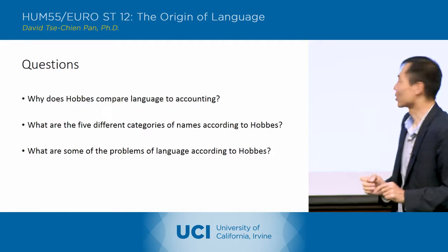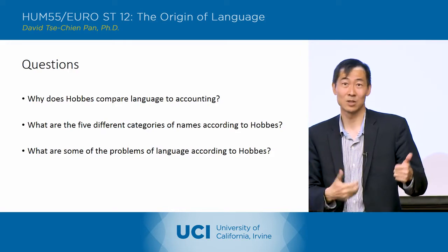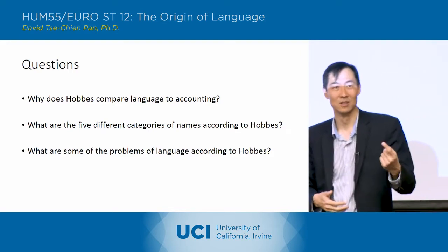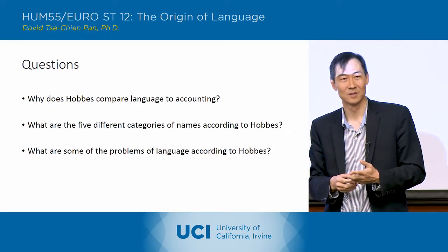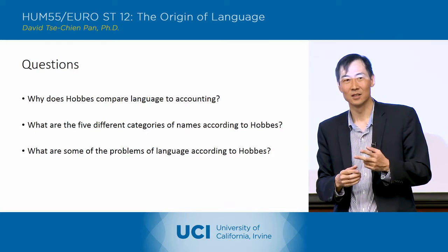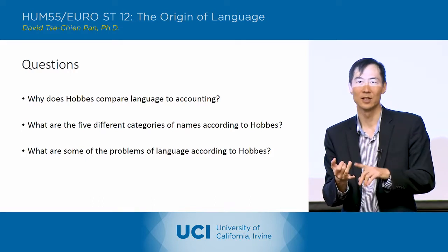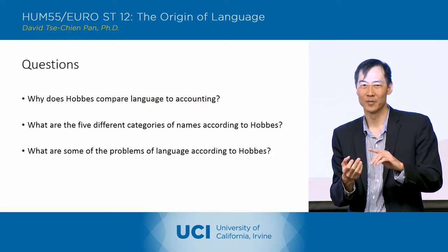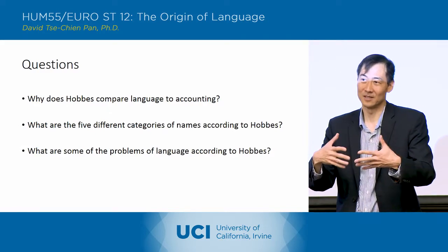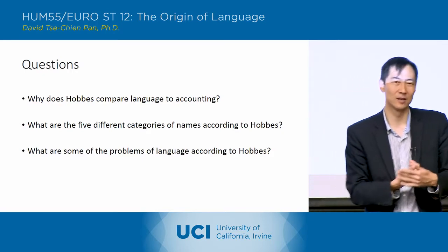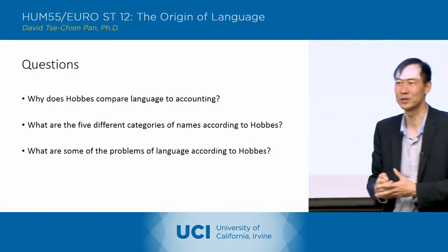What are the five different categories of names according to Hobbes? Names of things - names of matter. Names of qualities. Fancies. Negatives. And names of names. So: names of matter, names of qualities, names of fancies, names of names - words that have as their category other types of words - and then negatives. Those are the five classes of words that Hobbes identifies.